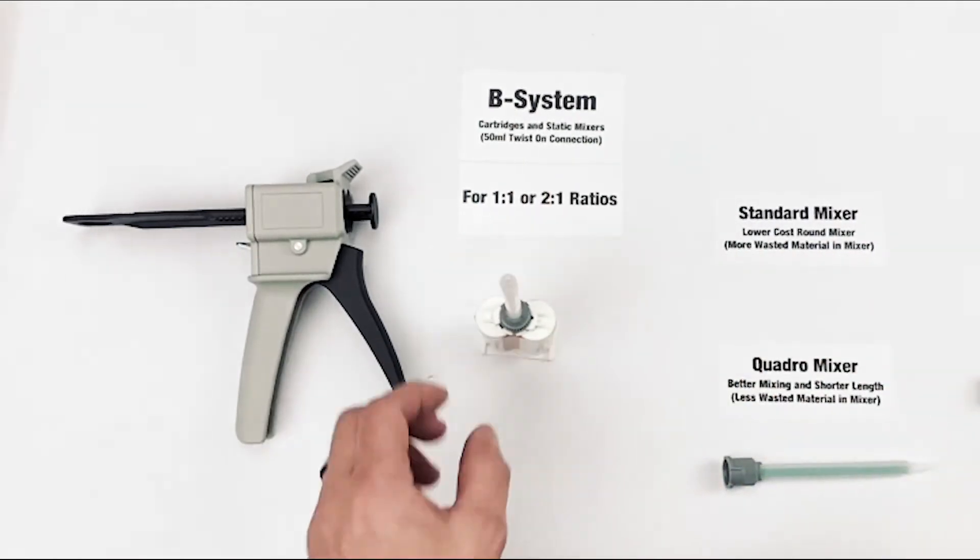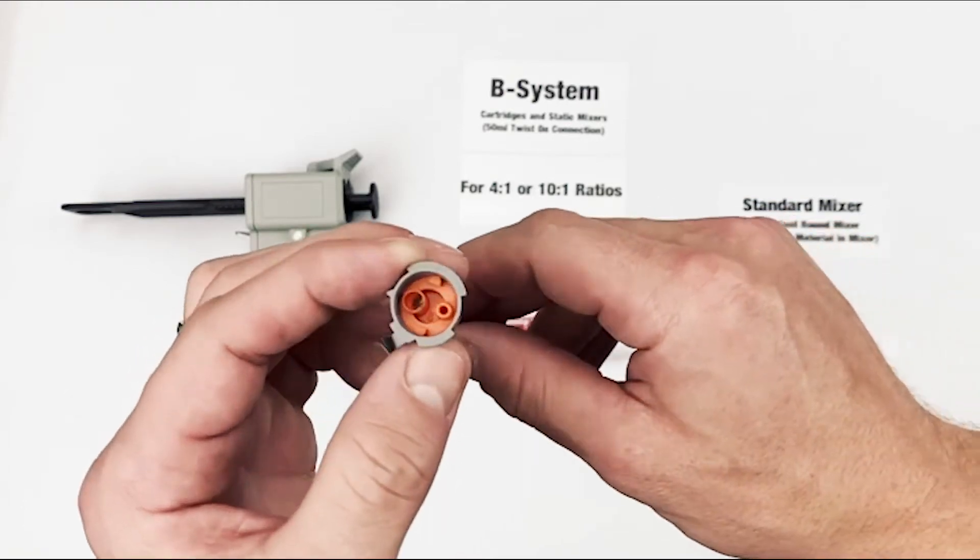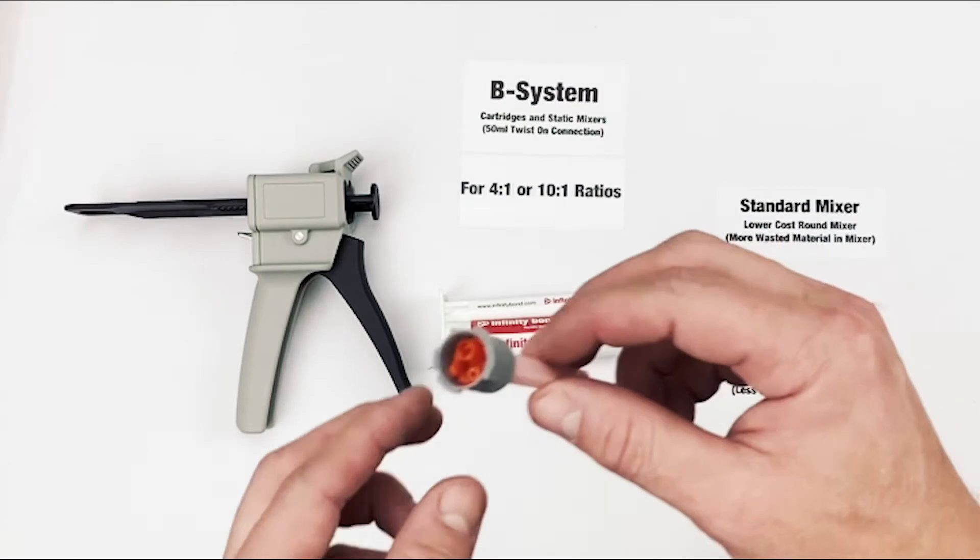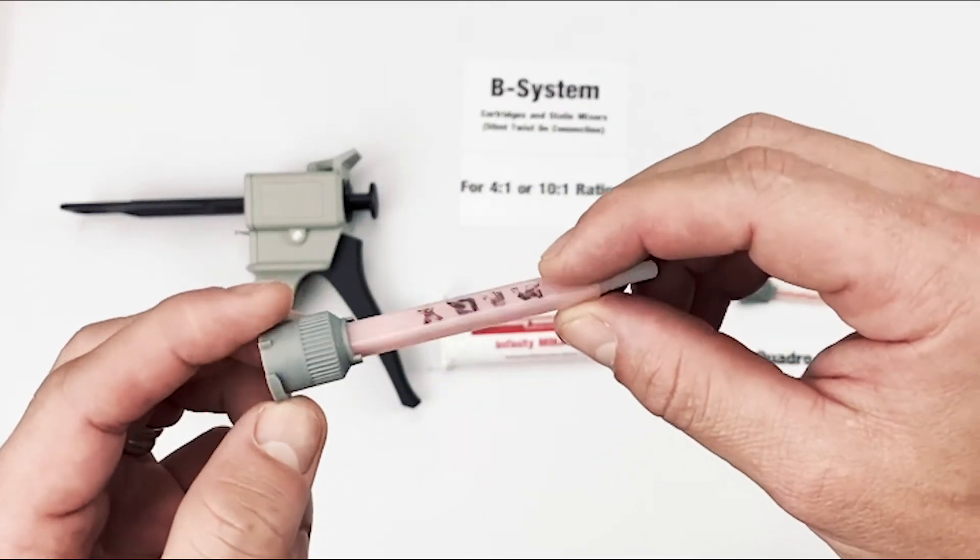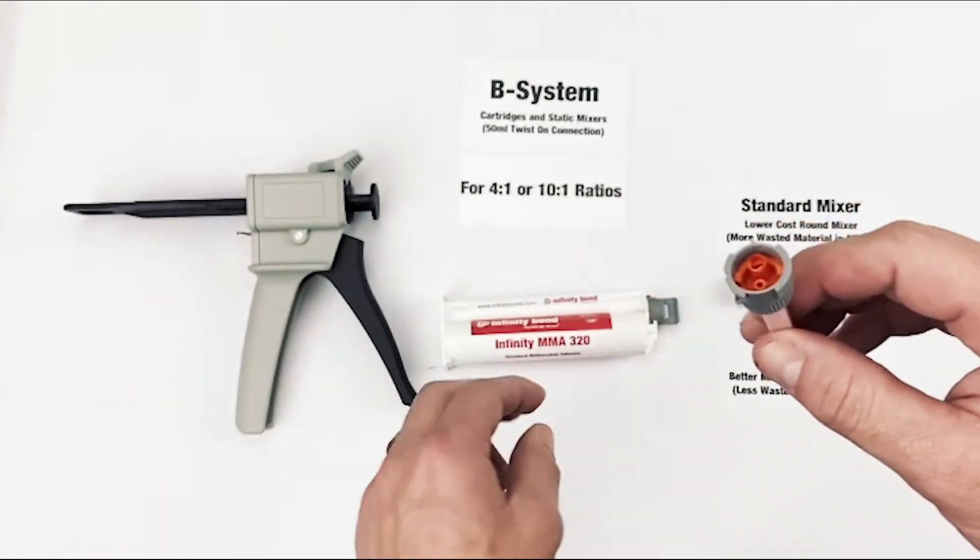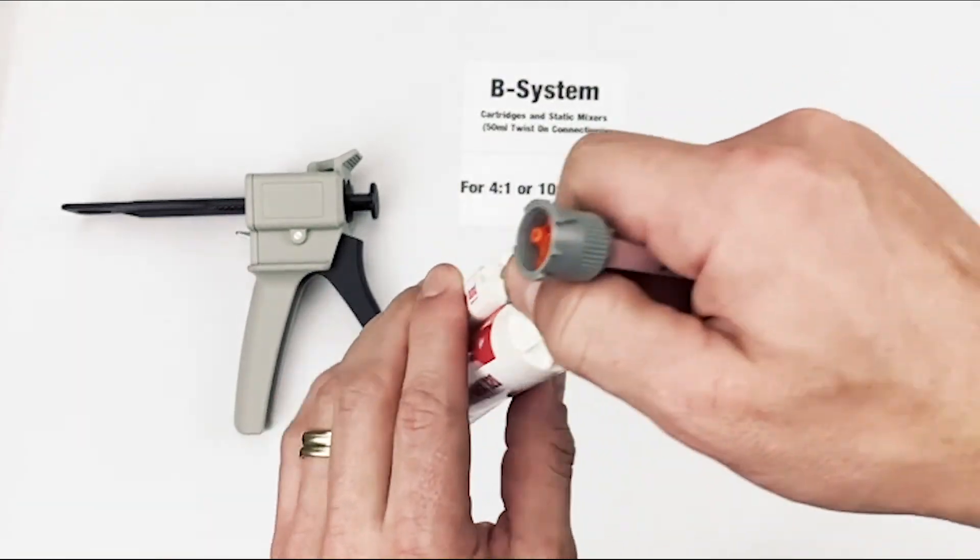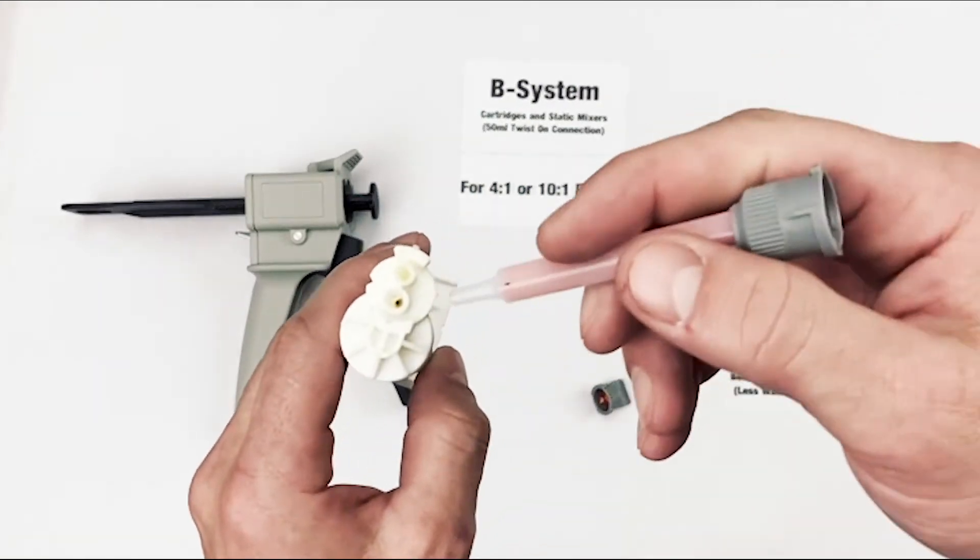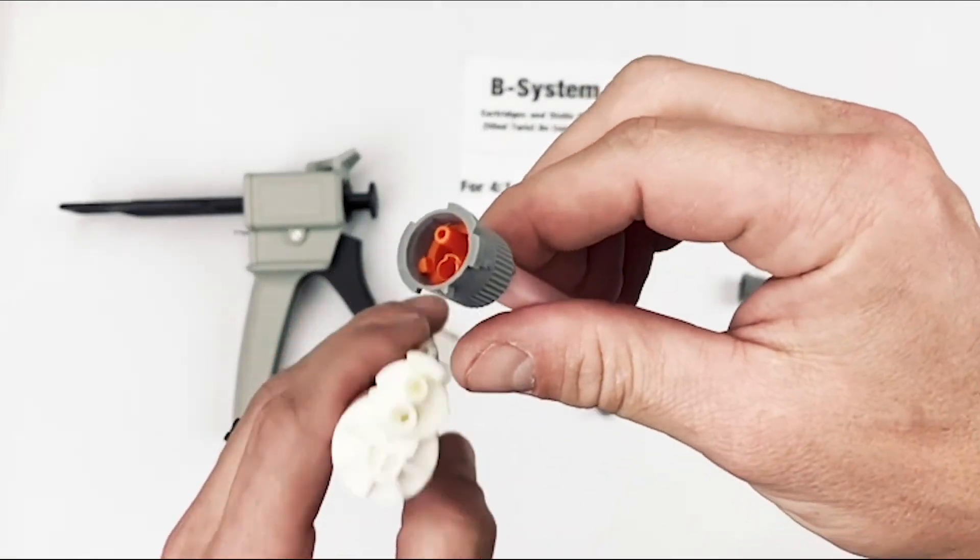B-System Static Mixers for 4 to 1 and 10 to 1 ratio adhesives also come in Standard and Quadro configurations. These mixers typically have orange elements inside the nozzle to designate the 4 to 1, 10 to 1 ratio. Please note that 1 to 1, 2 to 1 mixers will not fit 4 to 1, 10 to 1 cartridges and vice versa.